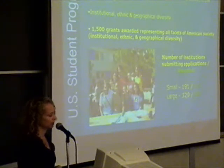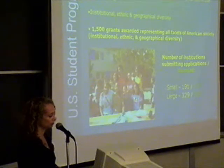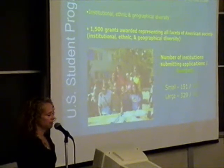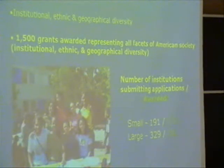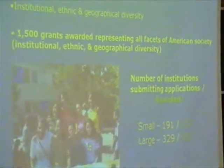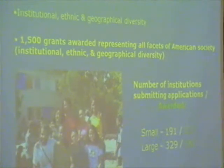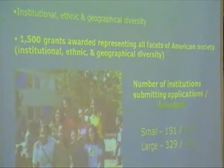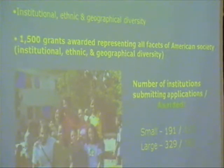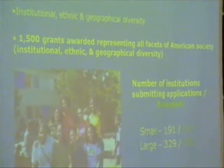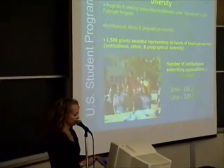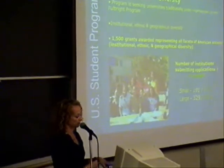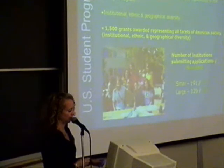In running this program, the goal is to have applicants coming from universities that are traditionally underrepresented — when you look at places like Harvard and elite institutions, they're sending lots of students. The program is trying to get more universities from all over the country to have students who are successful in the application process. They award about 1,500 grants representing all facets of American society, and you can see the different types of institutions — small universities and large universities — in the applicant pool.